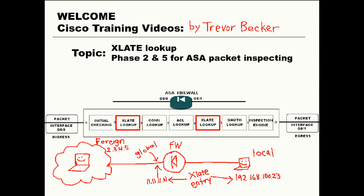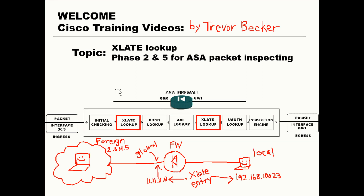Now that Xlate entries are explained, let's go back to why there are two phases to Xlate in the packet inspection process. The reason why there are two phases is because there are two different ways in which connections can flow — inbound connections or outbound connections. The direction of the traffic is the variable that decides which phase Xlate is inspected on. The second phase is used for outbound connections only, and the fifth phase is used for inbound connections.